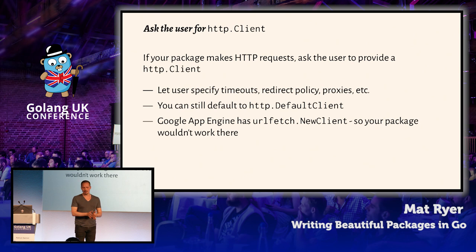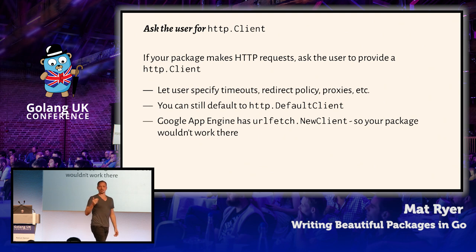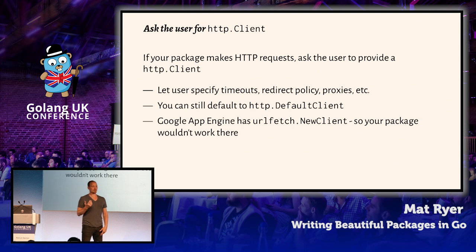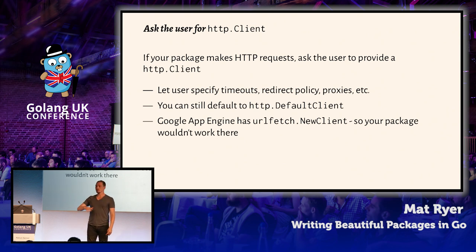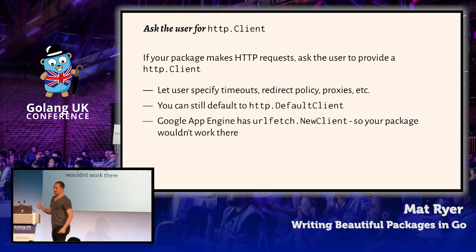Ask the user for the HTTP client. If you're making HTTP requests, let the user provide the client — they can control it. In some cases if you didn't do this, like on App Engine, you can't make requests using the default client — you have to ask for a client from the URL fetch package. So you actually prevent your code from being able to run on App Engine just because you're making that decision about the HTTP client. By all means make the zero value useful — default to the default client — but let the user give you their client.